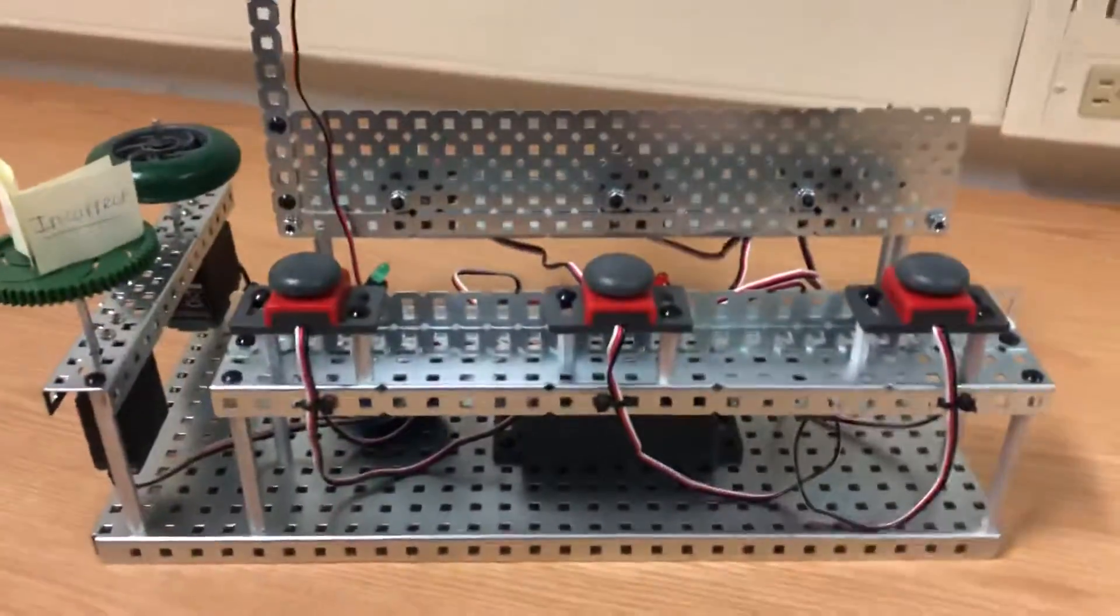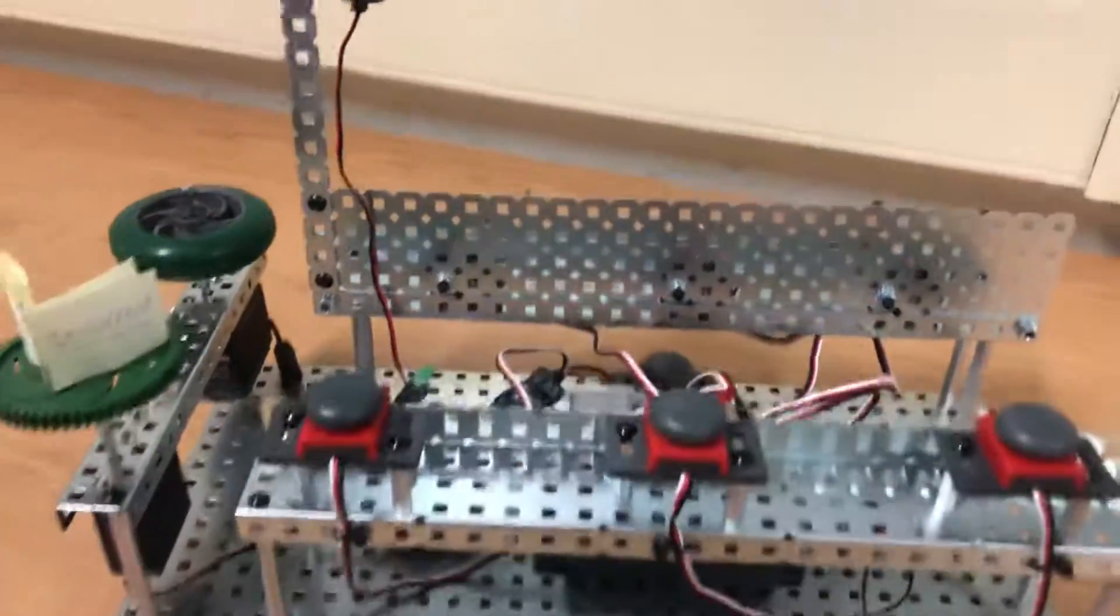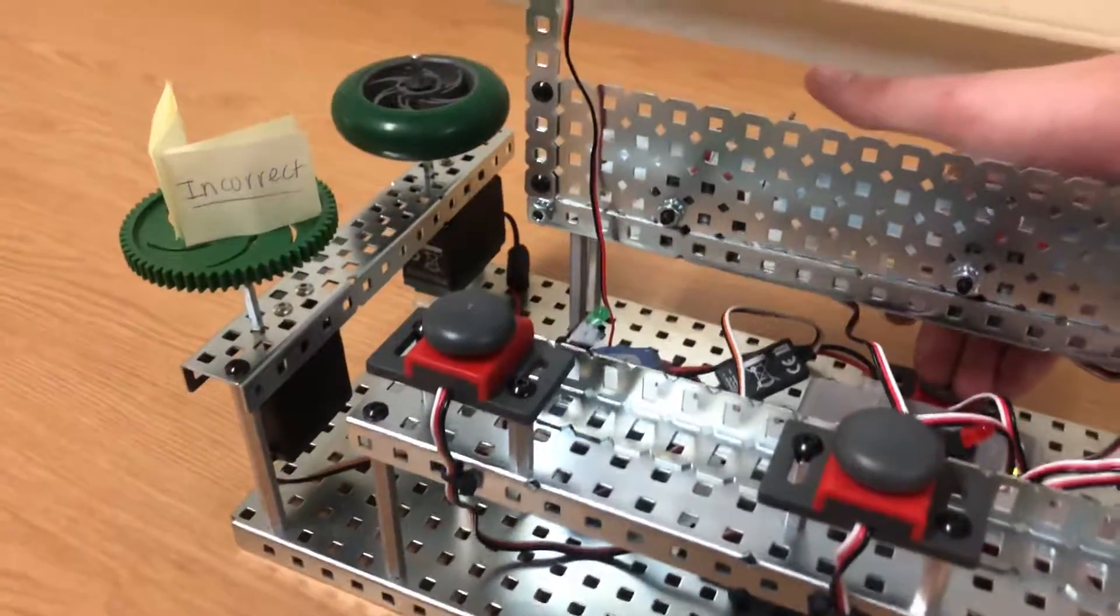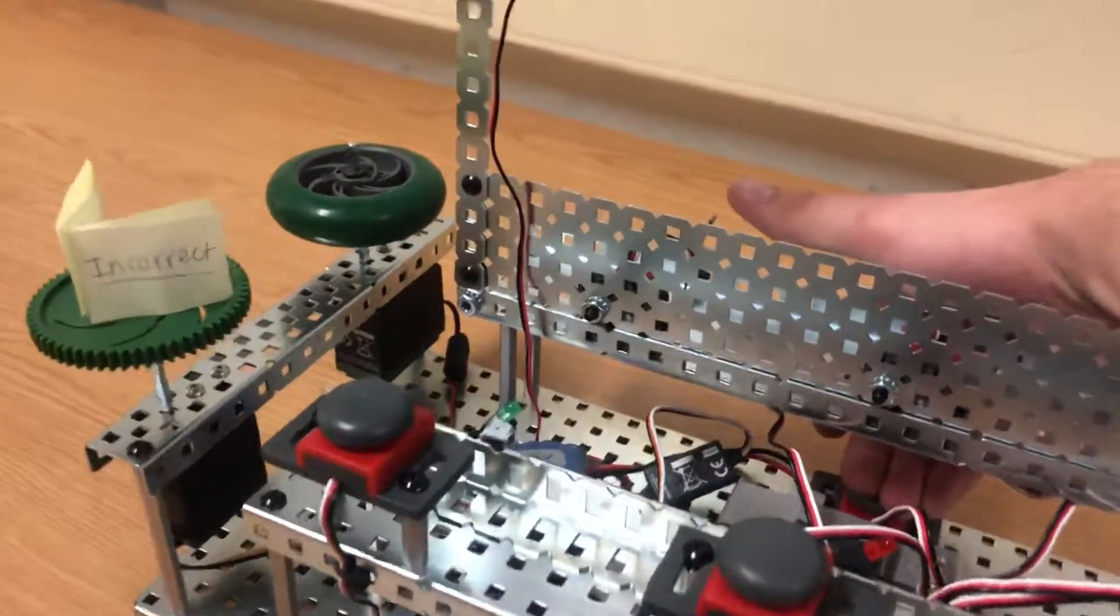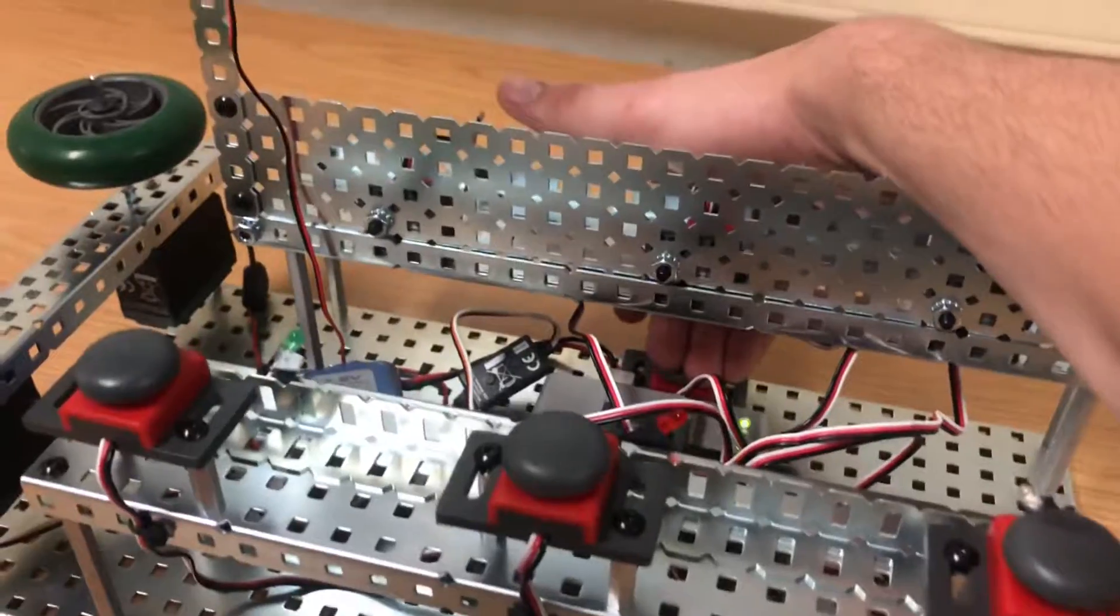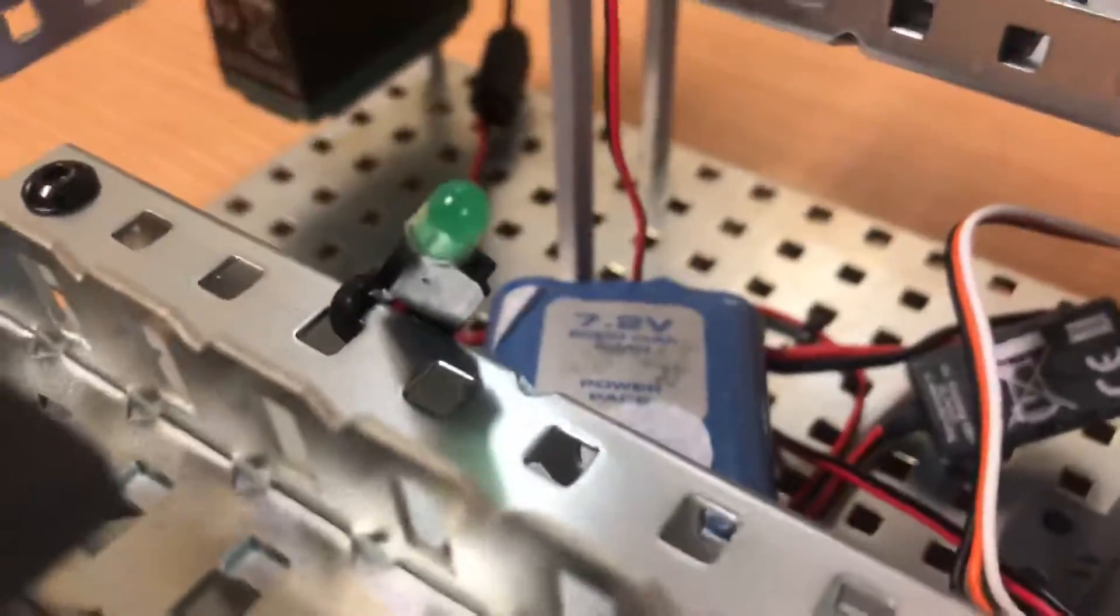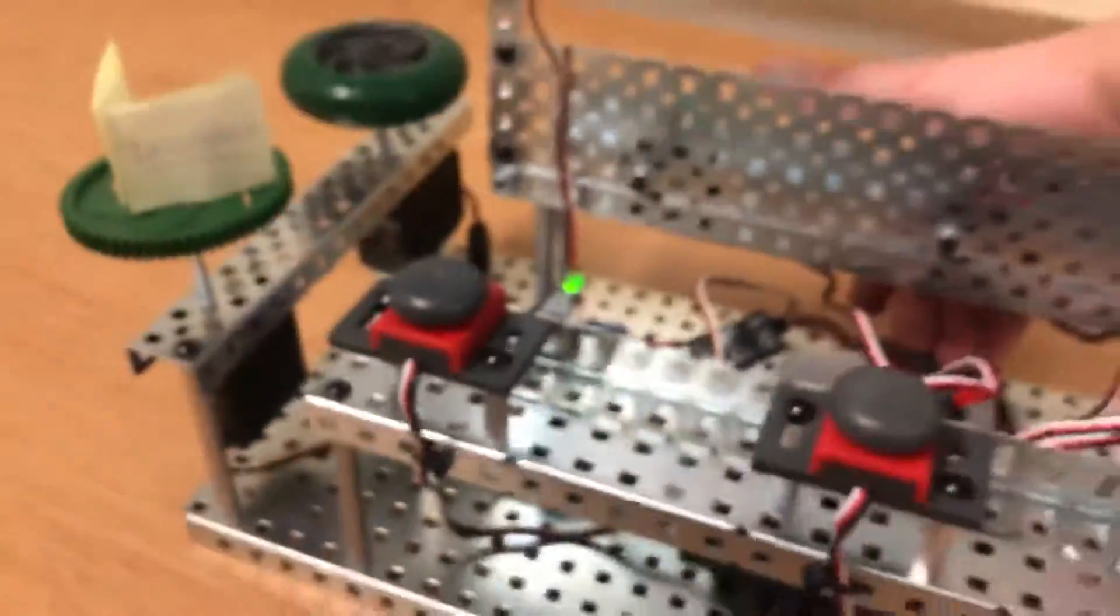All right, so let's say we ask a question and the master switch is held down. All right, so as a contestant, whoever gets there first will have their answer be selected first. So let's say green wins on this one. I'm going to press the button for green. They light up.